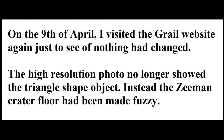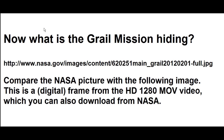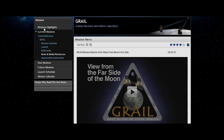On the 9th of April, while I visited the GRAIL website for the second time to see if nothing had changed, I noticed something different. The high-resolution photo NASA uploaded no longer showed this triangle-shaped object. The video no longer shows the object either. Instead, the Zeman crater had been made fuzzy — the triangle-shaped object has been made invisible. What is the GRAIL mission hiding? Comparing the two pictures, the NASA picture and my digital frame, we can see there is a clear difference.